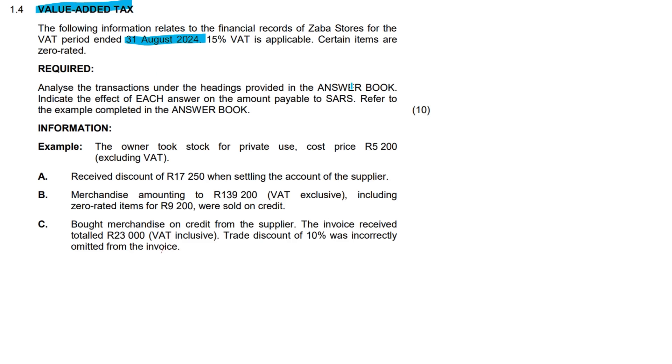So analyze the transactions under the headings provided in the answer book. Indicate the effect of each answer on the amount payable to SARS. Look, we don't have an answer booklet here. I'm just gonna freestyle it. The owner took stock for private use. Here's a nice example and the cost price was R5200. So the VAT amount here is just gonna be that cost price of 5200. We're gonna multiply that by 15% and we're gonna get R780.